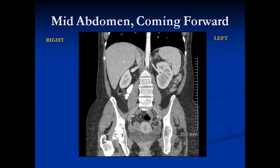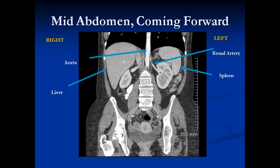Moving a little bit forward into the mid-abdomen, things change. Here we can see the aorta — a retroperitoneal structure sitting behind everything else. We can see the renal arteries going down from the aorta into the kidneys. There's the liver again, the spleen, and the psoas muscles on either side.